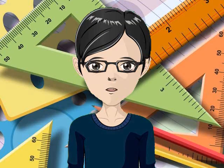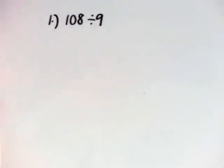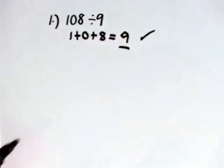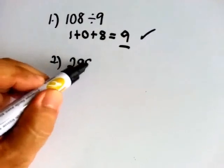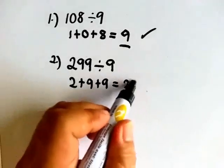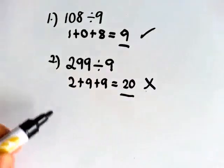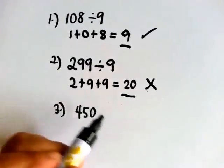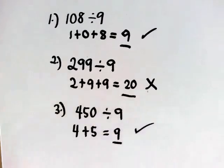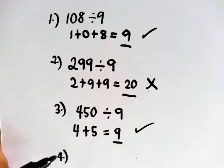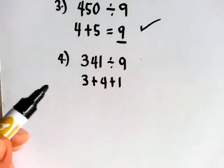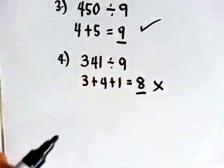Let's check your answers. Is 108 divisible by 9? We add the digits: 1 plus 0 plus 8 equals 9. Yes, 108 is divisible by 9. Is 299 divisible by 9? 2 plus 9 plus 9 equals 20. 20 is not in the multiplication table of 9. So the answer is no. Is 450 divisible by 9? 4 plus 5 plus 0 equals 9. 9 is in the multiplication table of 9. So the answer is yes. Is 341 divisible by 9? 3 plus 4 plus 1 equals 8. 8 is not in the multiplication table of 9. So the answer is no.